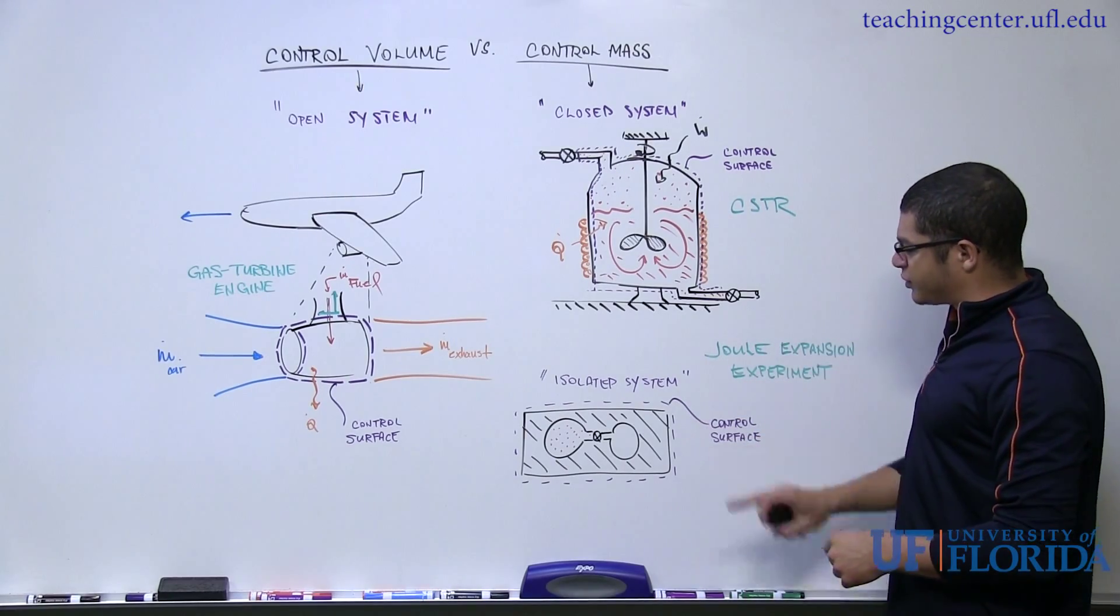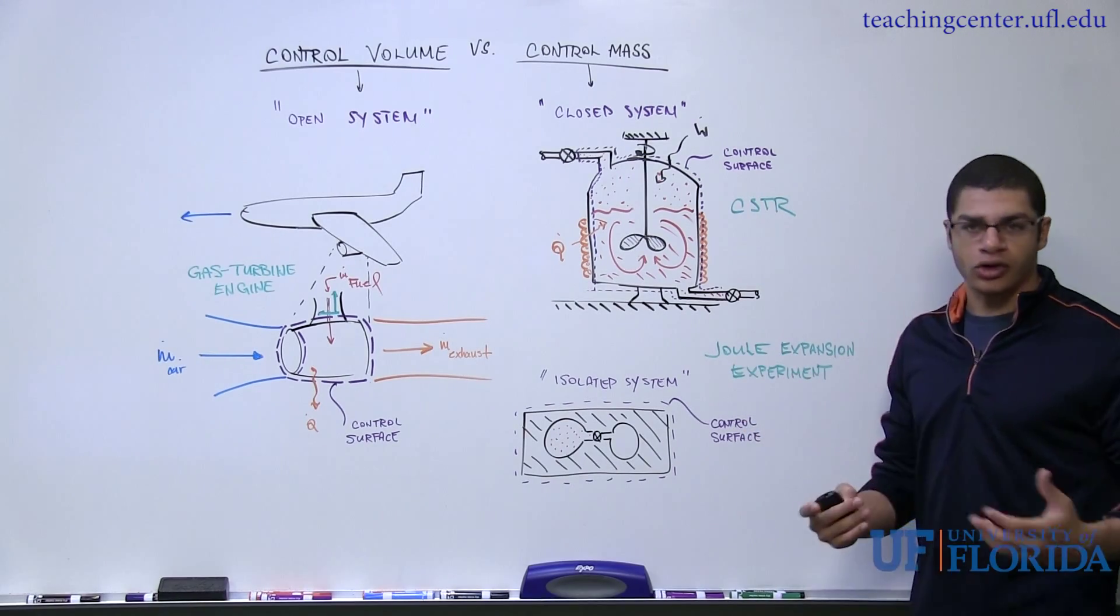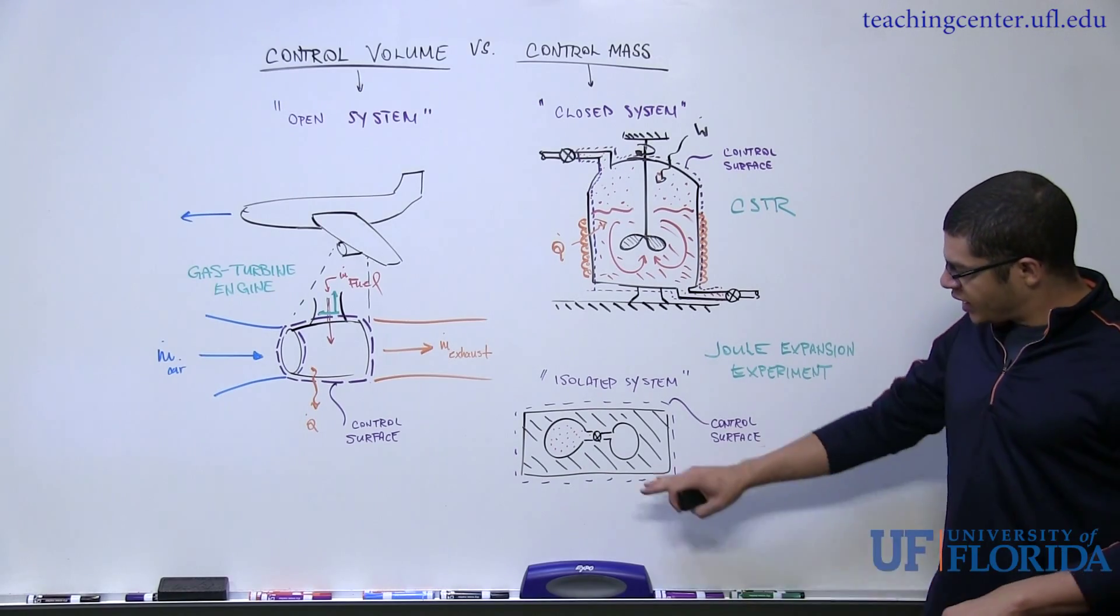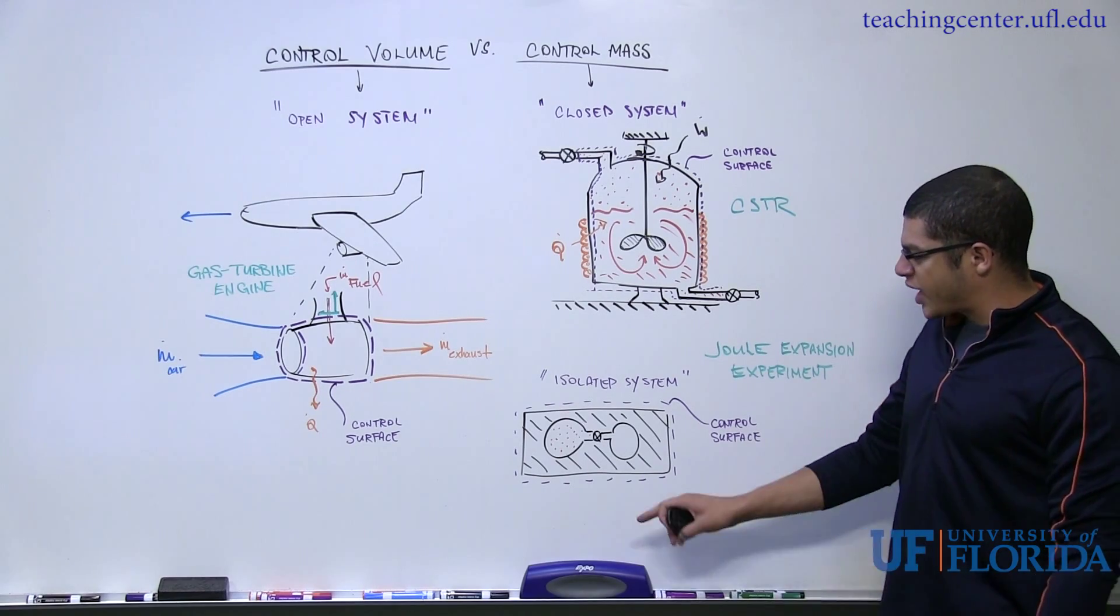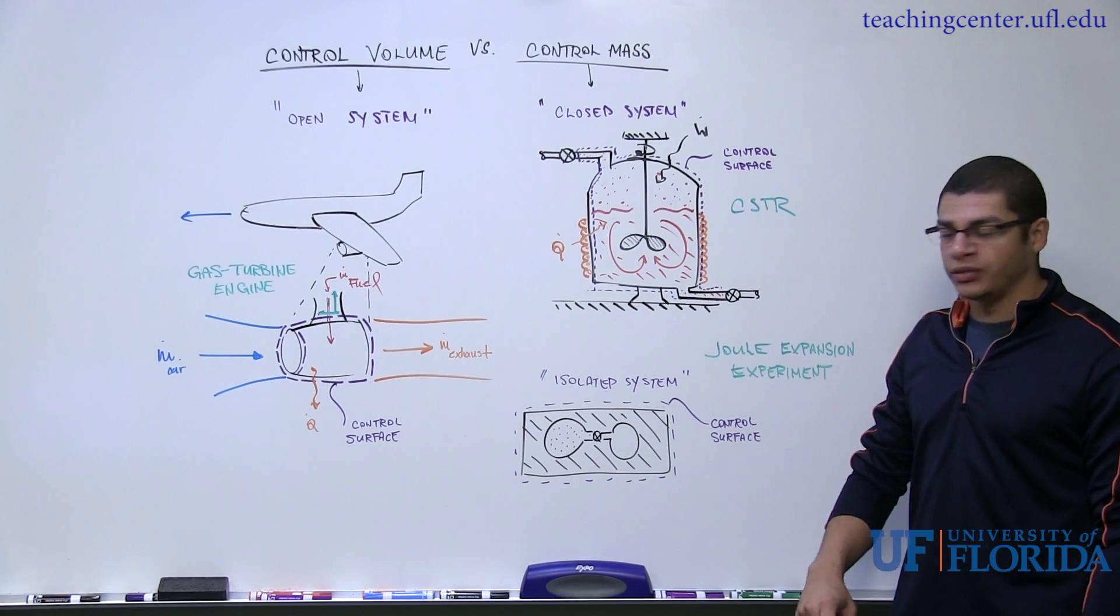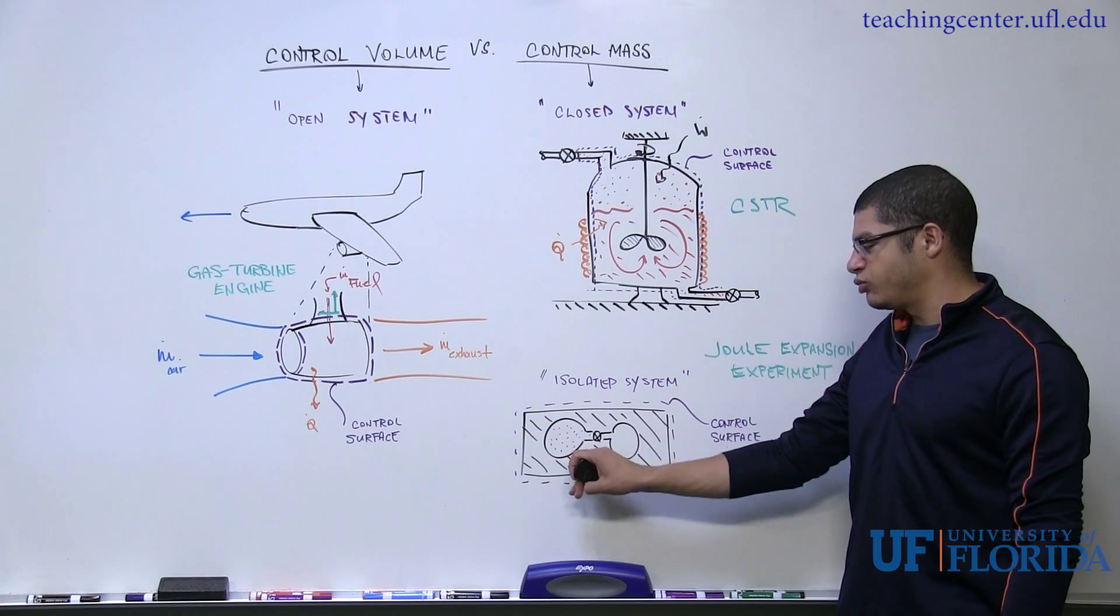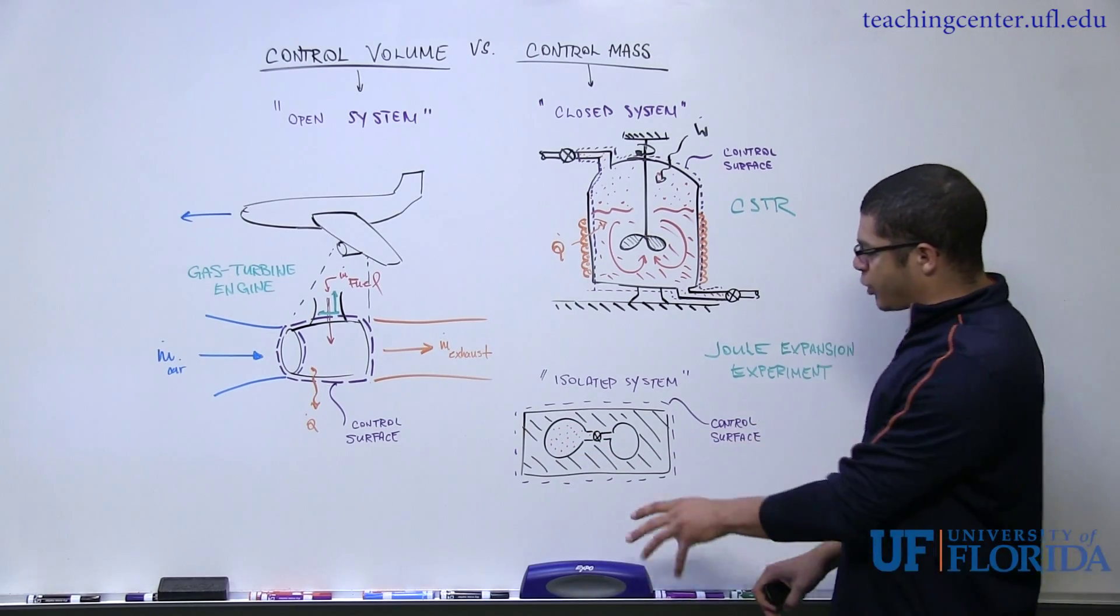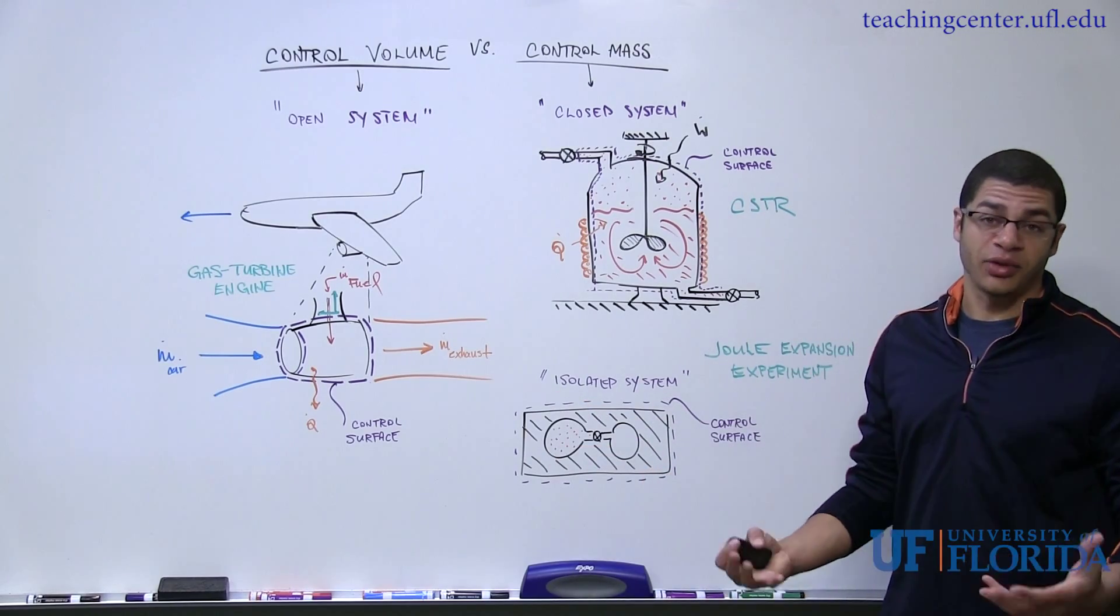So an isolated system, an example of which would be the Joule Expansion Experiment, which I'll talk about in more detail in another video, is shown schematically here. What I have are, say, two tanks that are connected by a valve in between. One side is pressurized with some kind of gas at relatively low pressure, and the other side is completely evacuated. And both tanks are embedded in a thick structure of some type of insulation.